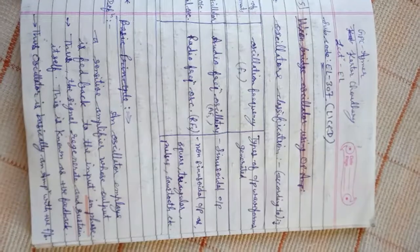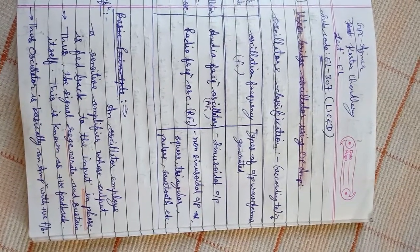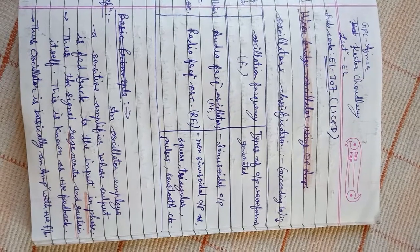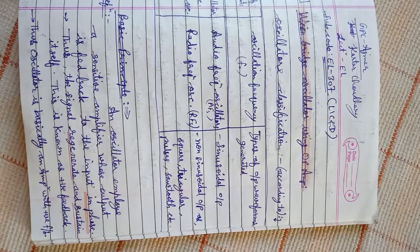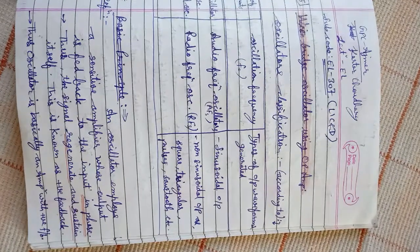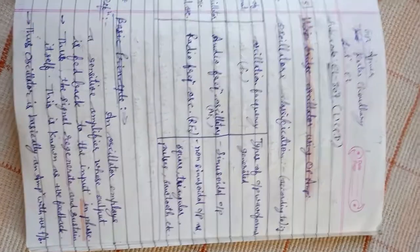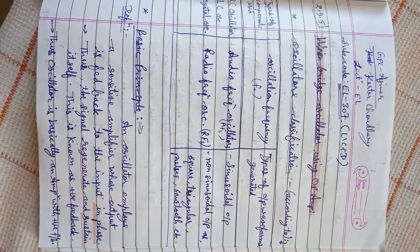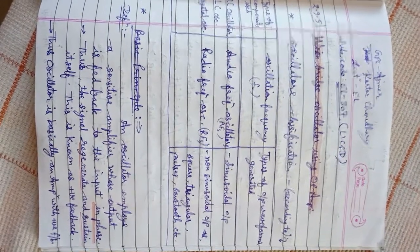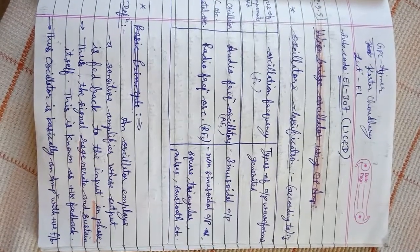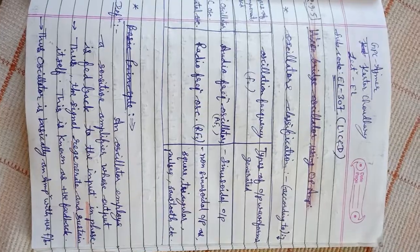Now, what is an oscillator? Basic definition: an oscillator is an amplifier whose output is fed back to the input in phase. Thus, it uses positive feedback. In an oscillator, positive feedback is given — not negative. A basic amplifier uses negative feedback, but in the case of an oscillator, positive feedback is used.